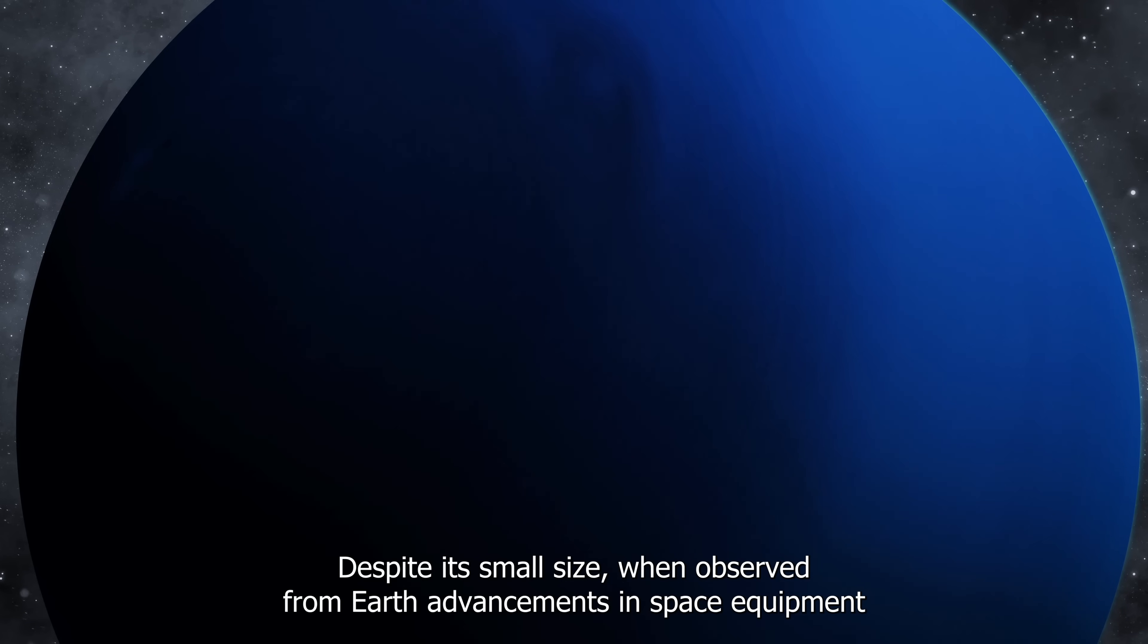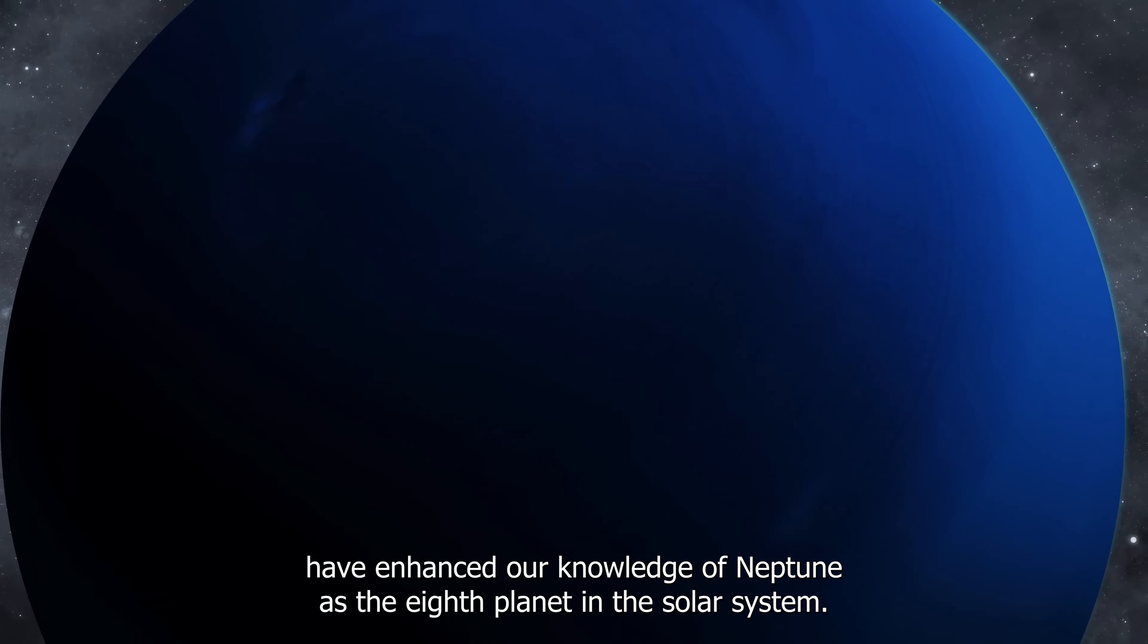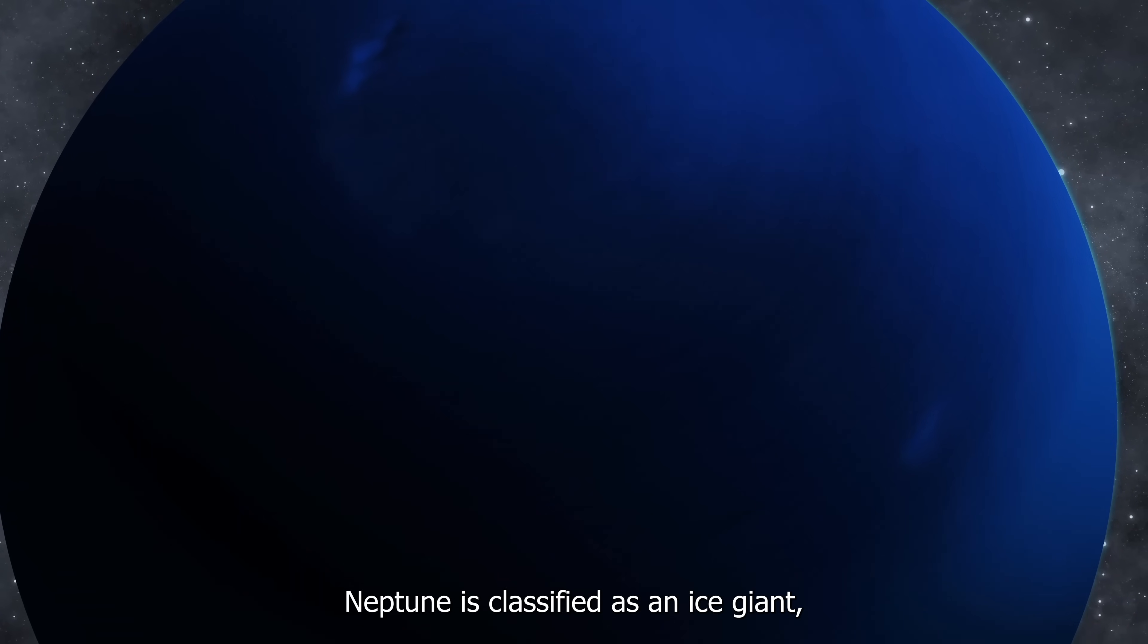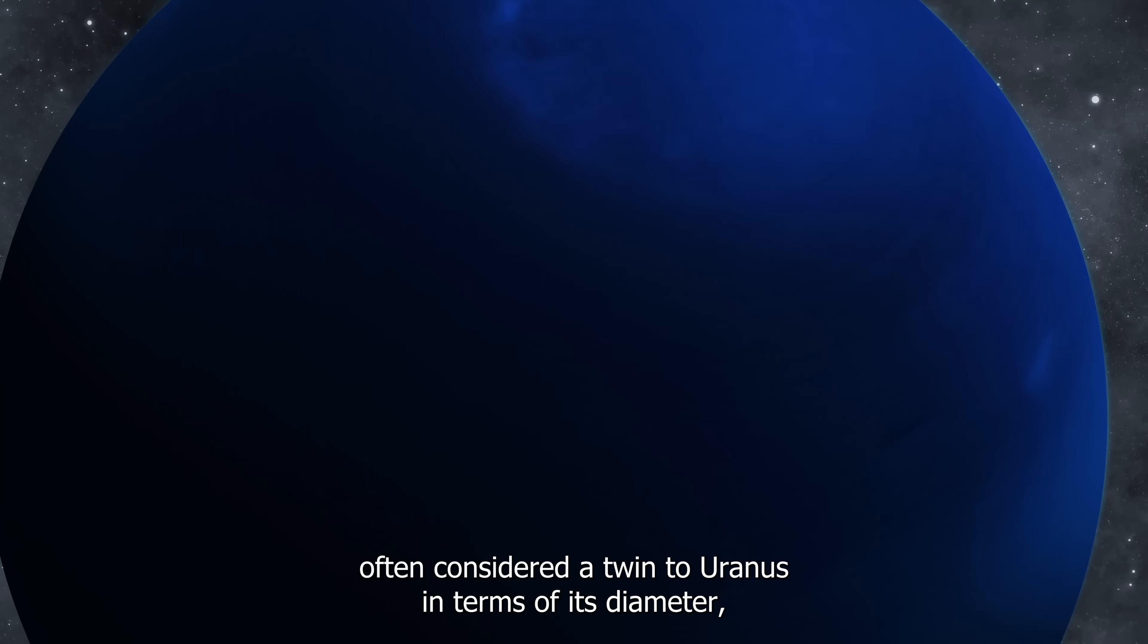Despite its small size when observed from Earth, advancements in space equipment like the Hubble Space Telescope and the James Webb Space Telescope have enhanced our knowledge of Neptune. As the eighth planet in the solar system, Neptune is classified as an ice giant, often considered a twin to Uranus in terms of its diameter.